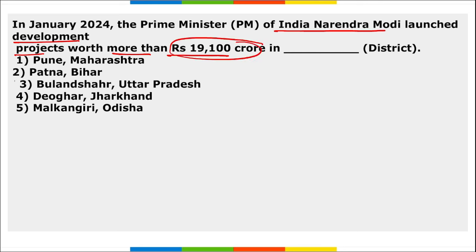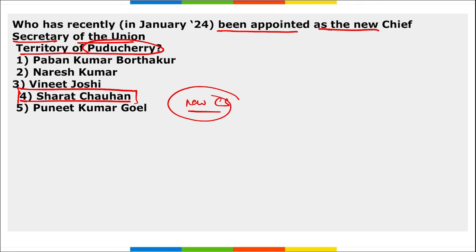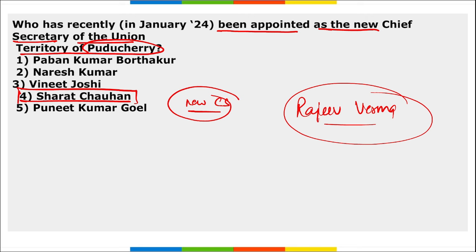Prime Minister Narendra Modi launched development projects worth more than 19,100 crore rupees in Bulandshahr district of Uttar Pradesh. Sharat Chauhan has been appointed as the new Chief Secretary of the Union Territory of Puducherry, replacing Rajiv Verma, a 1992 batch IAS officer.